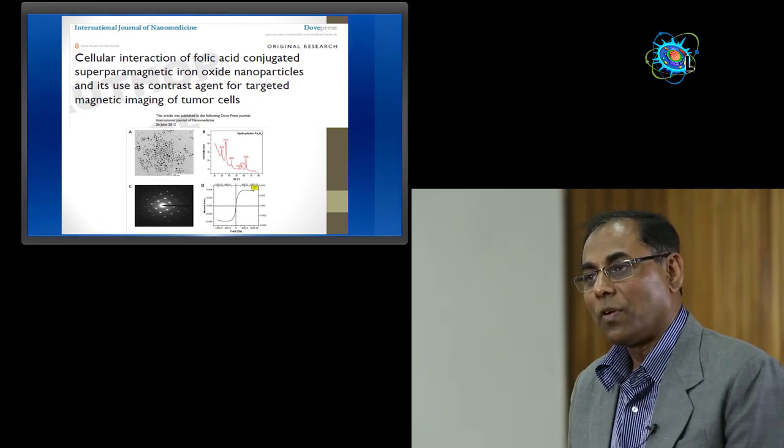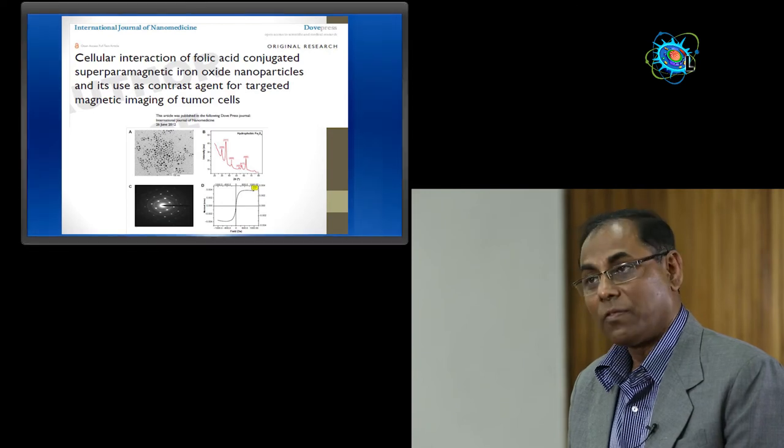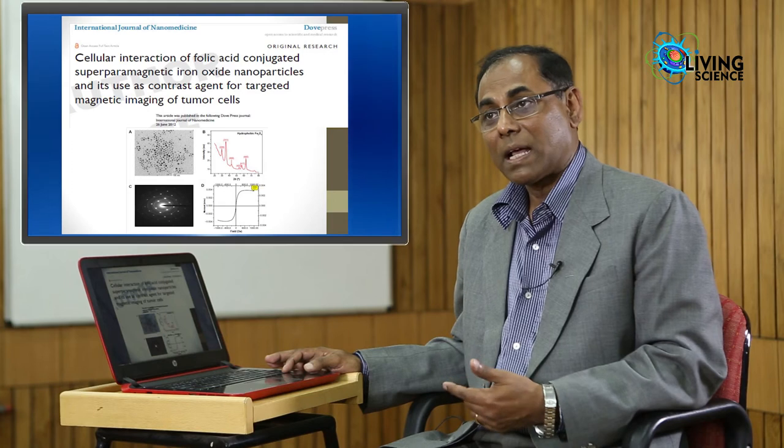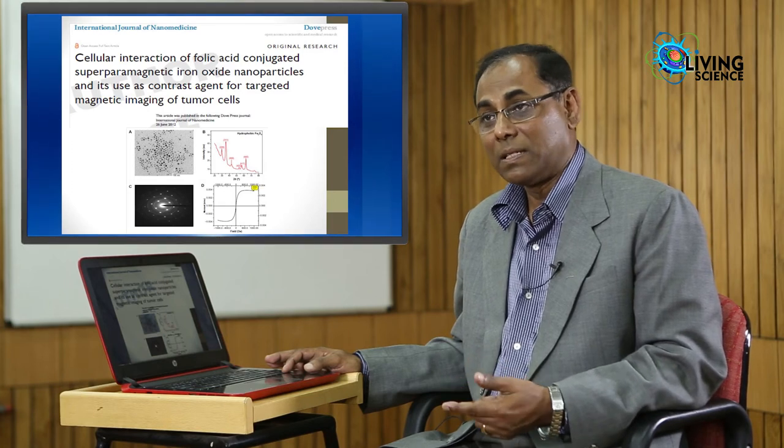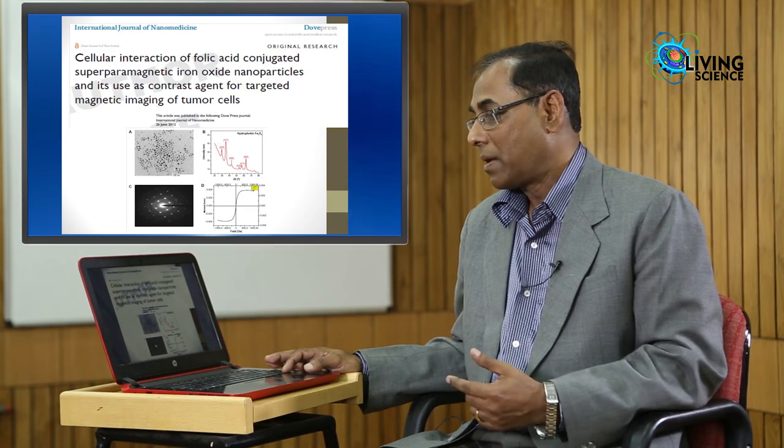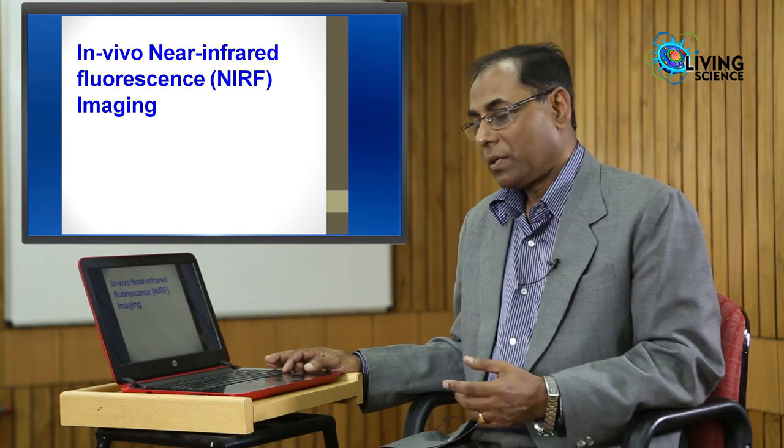We have also worked with superparamagnetic iron oxide nanoparticles, which can be used for MRI imaging. We have conjugated them with folic acid, which can detect breast cancer and ovarian cancer very easily and early. It has fantastic MRI capability. This kind of work can be done with huge potential.